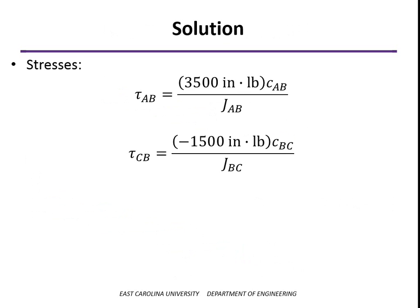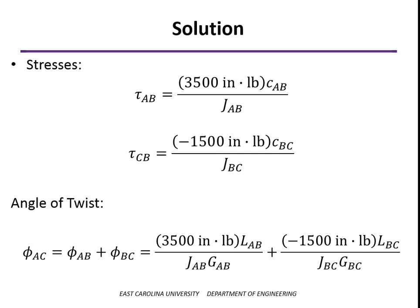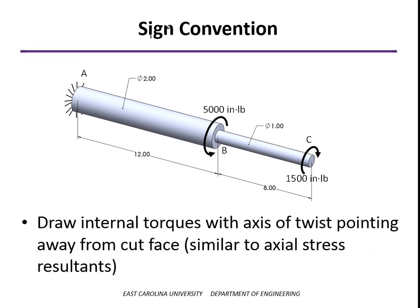The shear stress is TC over J, where C is the radius of the shaft in each segment. The total angle of twist is TL over JG — one segment has a positive value and the other negative, meaning one is counterclockwise and the other clockwise. Just like with axial stress resultants, draw the axis of twist pointing away from the cut face. If you do that consistently, you won't get any sign problems.